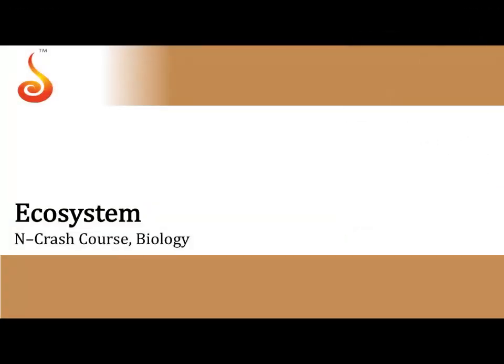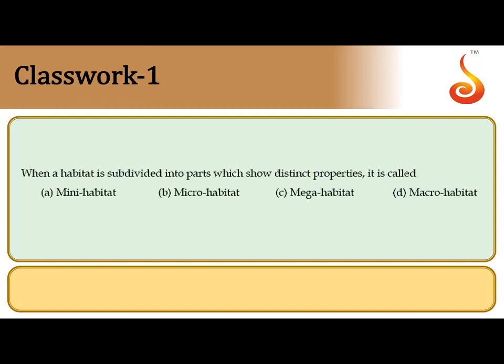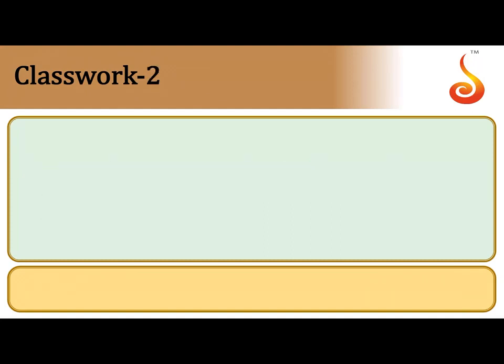Hello everybody, we shall be discussing practice questions in NEET crash course from the chapter Ecosystem. The first question asks when a habitat is subdivided into parts — distinct subunits within a habitat which show uniform properties of their own. Such a subunit is referred to as a micro habitat, so the correct answer is the second option: micro habitat.